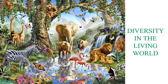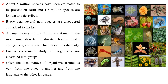Diversity in the Living World. About 5 million species have been estimated to be present on Earth, and 1.7 million species are known and described. Every year, several new species are discovered and added to the list. A huge variety of life forms are found in the mountains, deserts, freshwater bodies, water springs, sea, and so on. This refers to biodiversity.